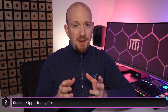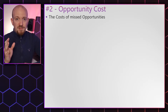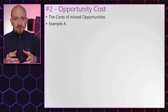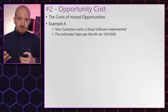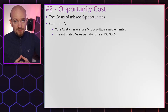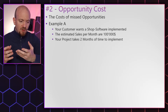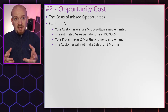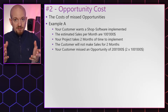Now let's talk about some different kinds of costs — specifically, opportunity costs. Opportunity costs are the costs of missed opportunities. For example, your customer wants a shop software created. The estimated sales per month out of this software would be $100,000. Your project takes two months to complete, so the customer will not make any sales for two months. The sales would have been worth $200,000, so the missed opportunities in those two months are $200,000.